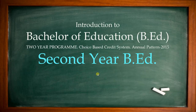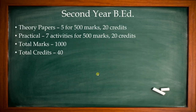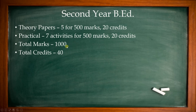Let us see the second year B.A.D. syllabus one by one. In the second year B.A.D. you will have 5 papers, having 500 total marks and 20 credits allotted. There is also a practical part having 7 activities for 500 marks and 20 credits. Total 1000 marks are given for second year B.A.D. and total credits are 40.